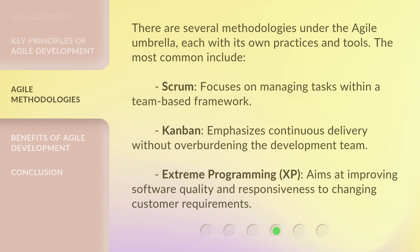There are several methodologies under the Agile umbrella, each with its own practices and tools. The most common include: Scrum, which focuses on managing tasks within a team-based framework; Kanban, which emphasizes continuous delivery without overburdening the development team; and Extreme Programming, or XP, which aims at improving software quality and responsiveness to changing customer requirements.